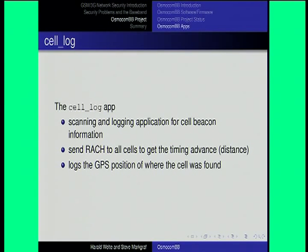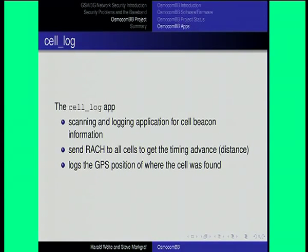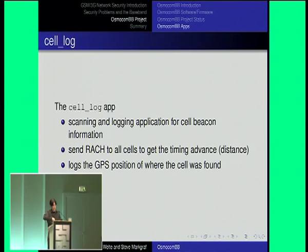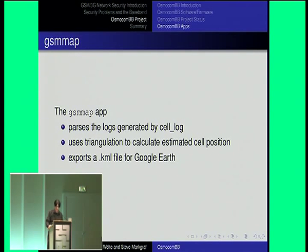The other application we have is a cell log application. The cell log application allows you to scan and log cell beacon information. You can also send random access channel requests to get the timing advance — we request a channel from each cell we see. By establishing a channel for a short time, this timing advance is negotiated, and thereby we also know how far the cell is apart from us, with a certain granularity. And if you connect a GPS receiver, you can obtain all this information. There's a second program called GSM Map that parses those logs and uses triangulation to calculate the estimated cell position and generates KML files that you can use with Google Earth.